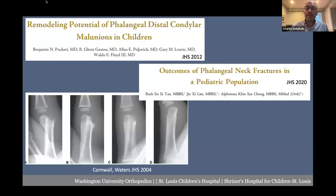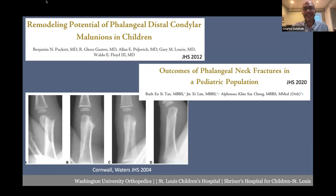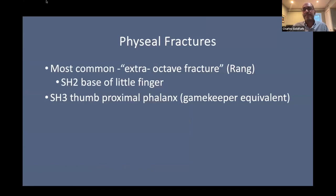This is a great series of x-rays showing a subchondral fracture that remodeled over time — a long way from the growth plate, but in a five- or six-year-old, remodeling can happen. Growth plate injuries — the extra-octave fracture is most common. In our practice, that fracture plus the Salter-Harris 2 or 3 of the base of the thumb proximal phalanx are the most common physeal injuries we see.